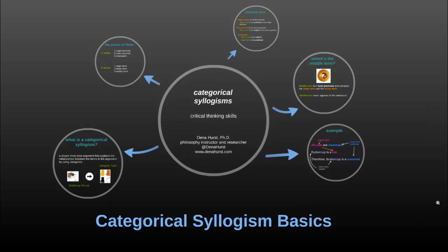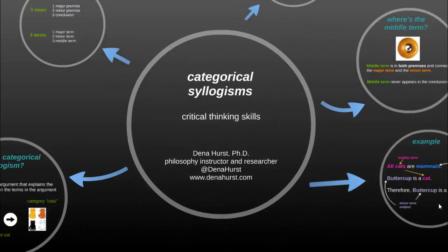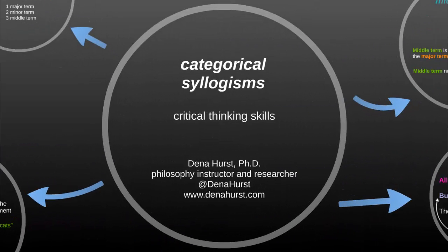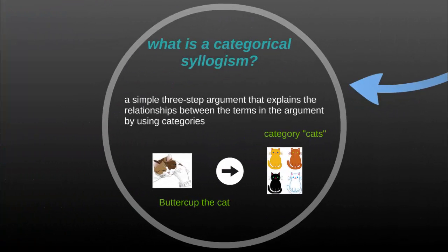Welcome to this short video on the basics of categorical syllogisms. The first question we need to consider is exactly what a categorical syllogism is. Basically, it's a three-step argument that explains the relationship between the terms within the argument by placing them in categories and looking at the relationships between those categories.